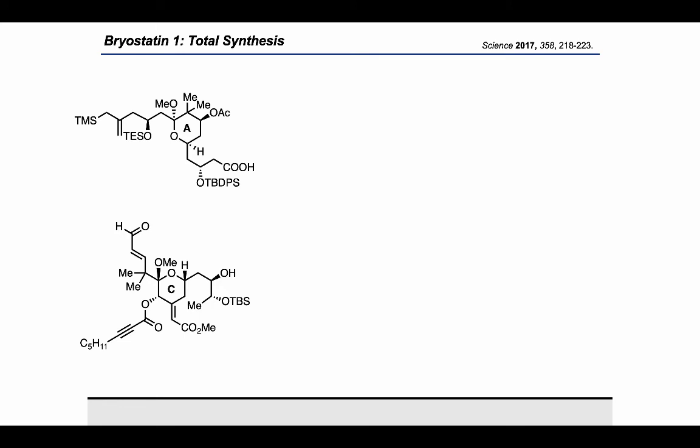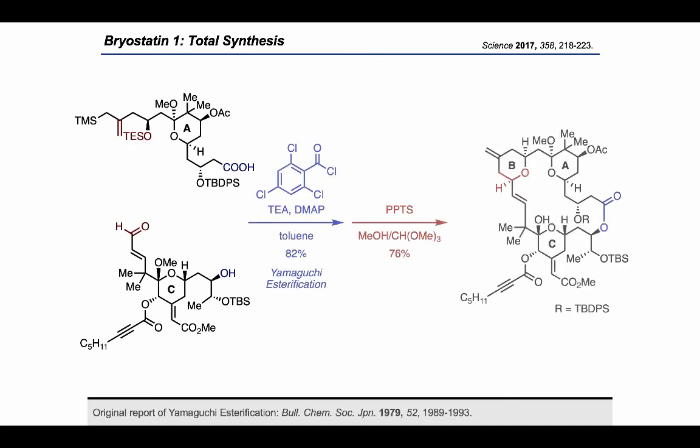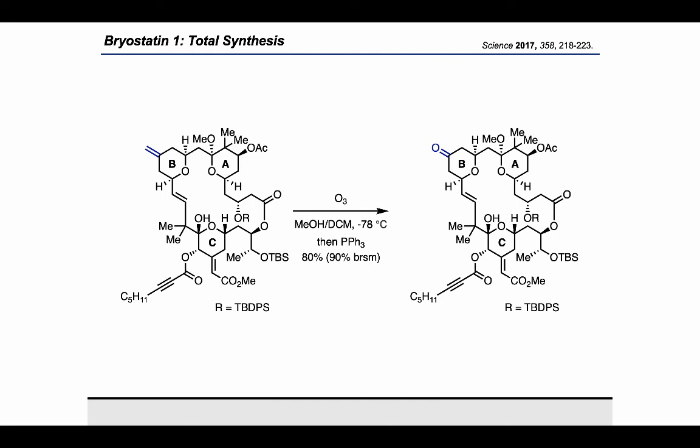With the C-ring and A-ring fragments in hand, the authors moved forward with fragment coupling. Using 2,4,6-trichlorobenzoyl chloride, they performed a Yamaguchi esterification to couple the fragments on the eastern side. Then, using PPTS and methanol, they performed a Prins annulation on the western half of the molecule to close up the macrocycle. An ozonolysis on the terminal alkene of the B-ring was fortunately successful in the presence of several other alkenes on the molecule, providing the ketone shown in the product.